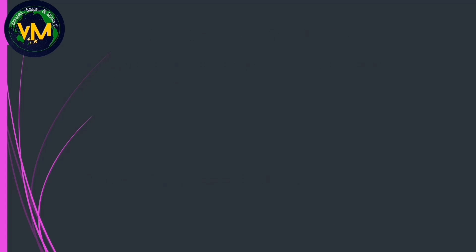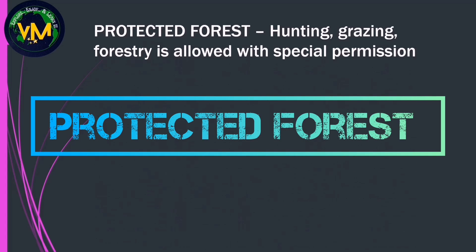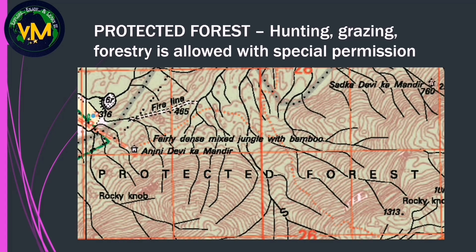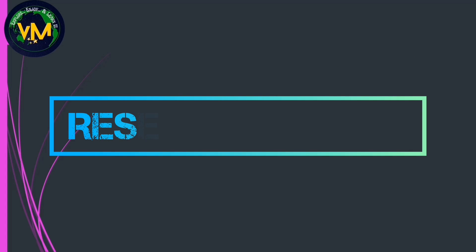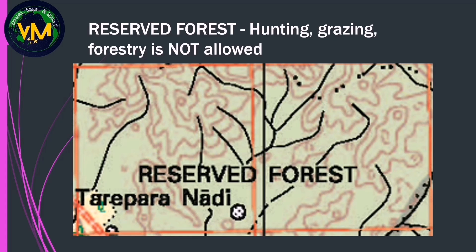In some maps we can also see the words protected forest. In these forests, hunting, grazing and other forestry activities are allowed only with special permission. Whereas in some maps we have reserved forests. In reserved forests, hunting, grazing and other forestry activities are not allowed.